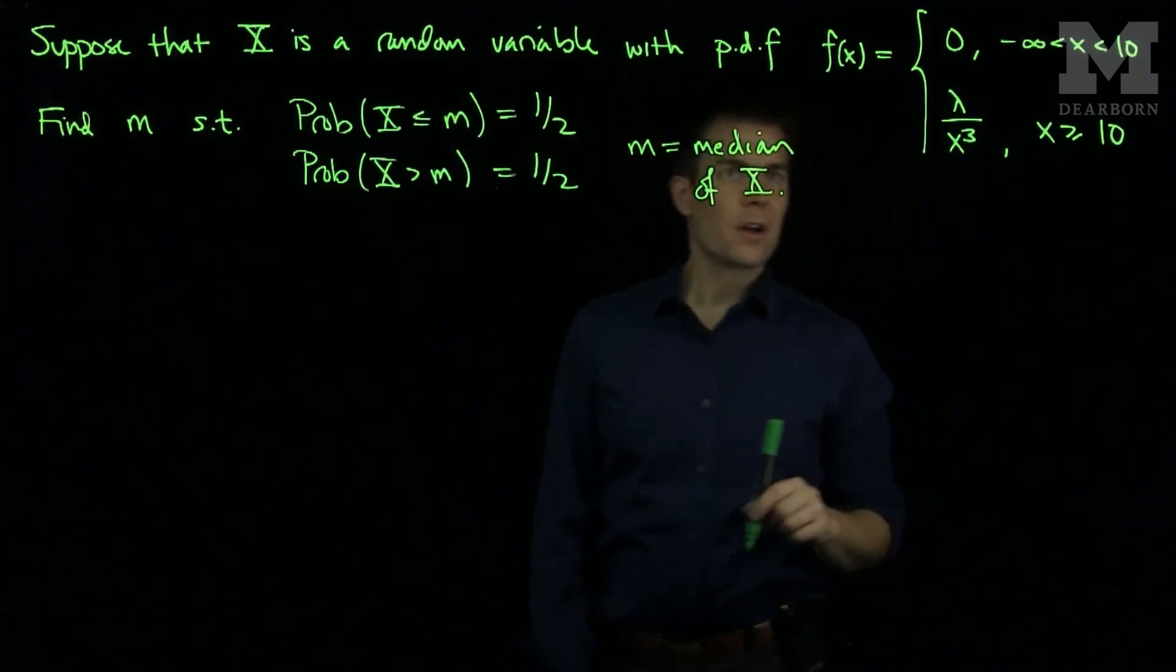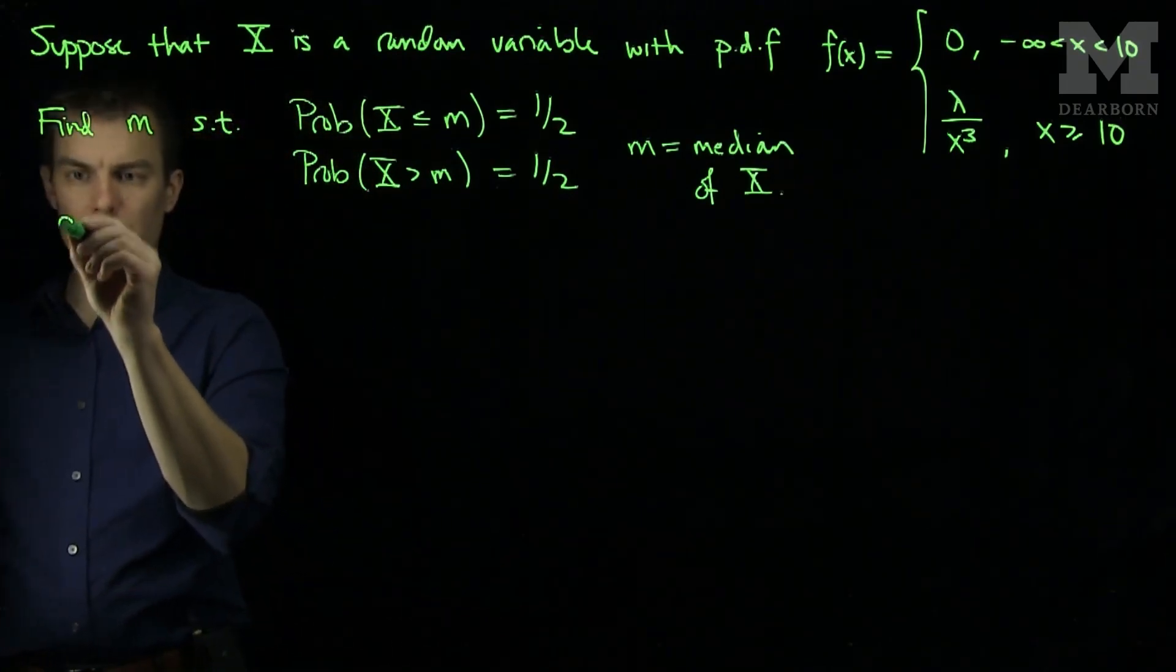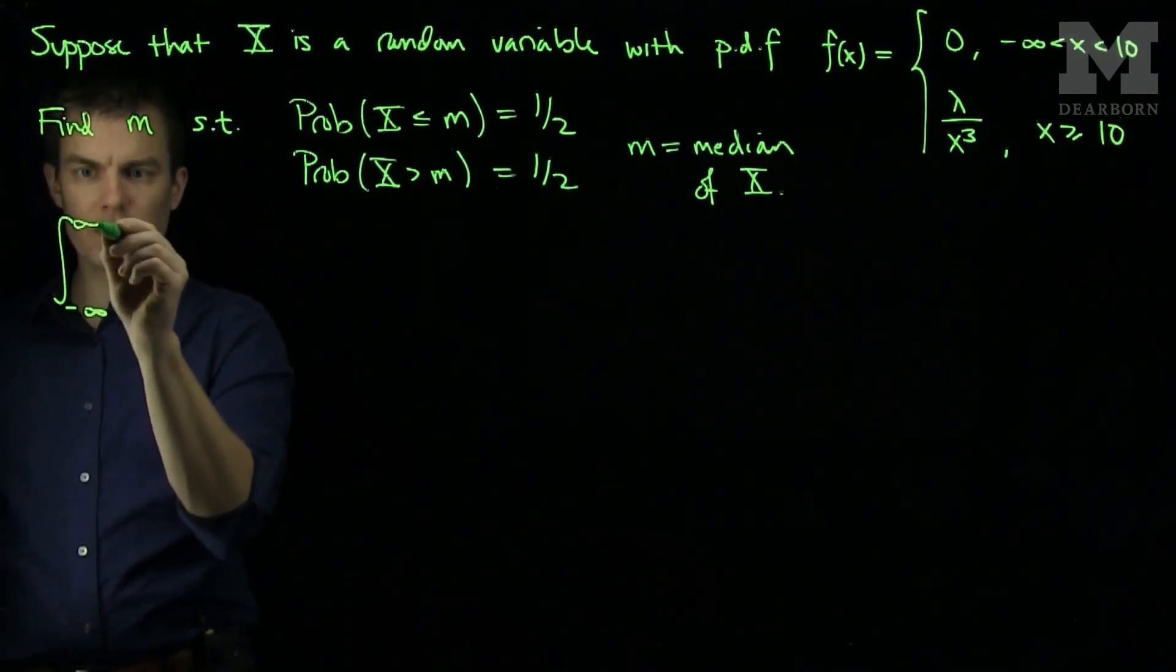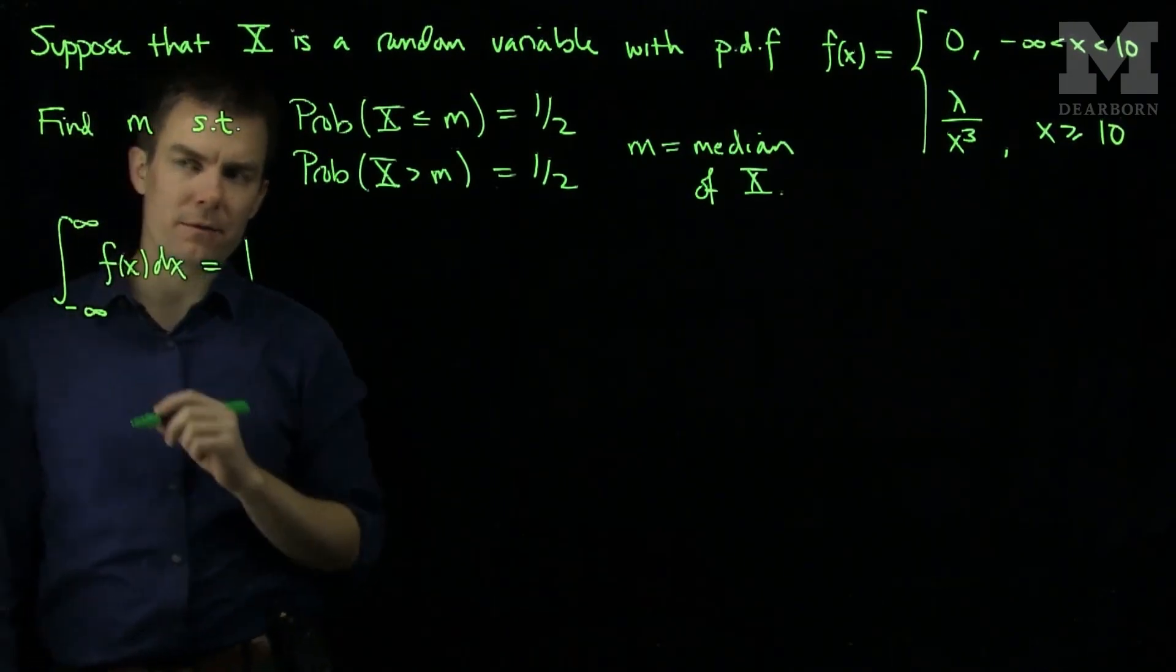So to find this value m we first need to find the parameter lambda in our problem. We know that the integral from negative infinity to infinity of f dx is equal to 1 by definition of pdfs.